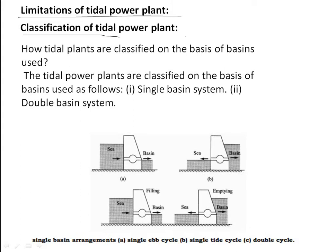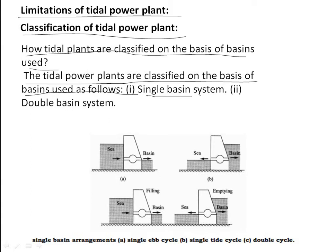Next we will discuss the classification of tidal power plants on the basis of basins used. Tidal power plants are classified as single basin system and double basin system. In the sketch, figure A shows the single ebb cycle, figure B shows the single tide cycle, and figure C shows the double cycle.